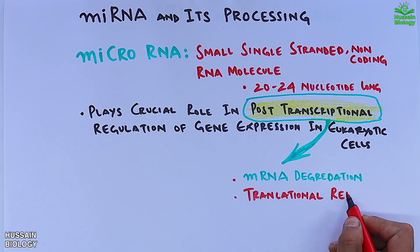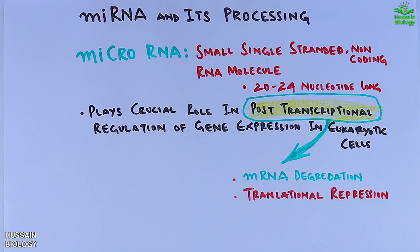Translational repression: Even if the mRNA is not destroyed, miRNAs can block its ability to produce proteins by repressing its translation.